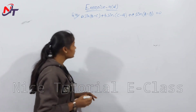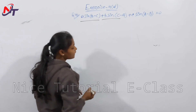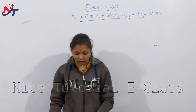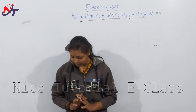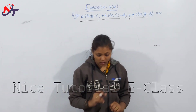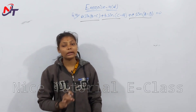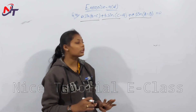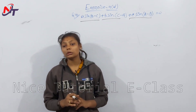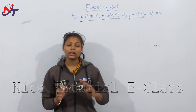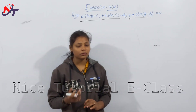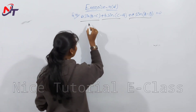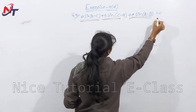Next question — Question number 4. In triangle FBC, prove that: A sin(B − C) + B sin(C − A) + C sin(A − B) = 0. So we need to show LHS equal to RHS.